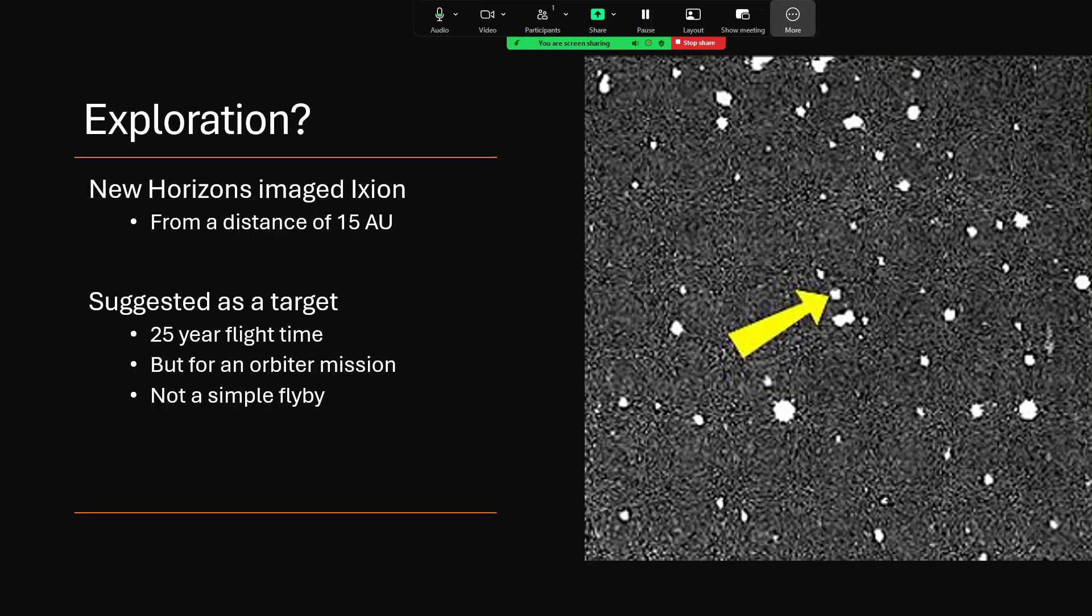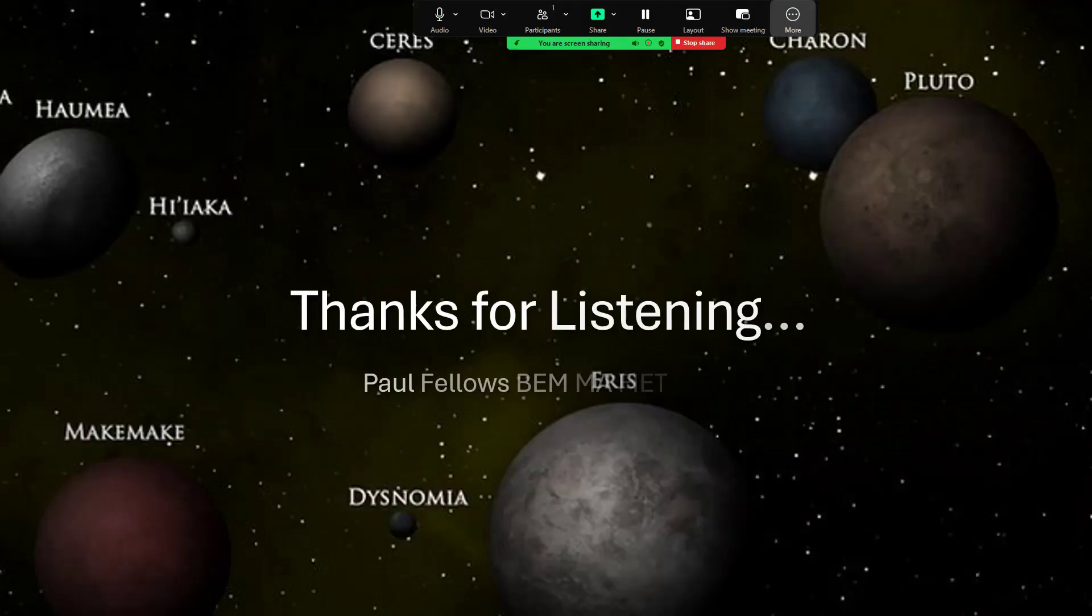And so that's a quick whistle-stop tour once around the Kuiper Belt object Ixion for you. So thanks very much for listening and I hope you've enjoyed that one and you get to check out some of the other Kuiper Belt objects in this little series. Thanks again.